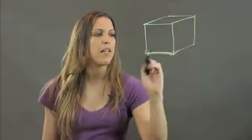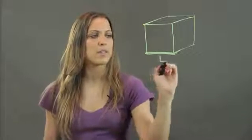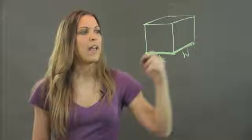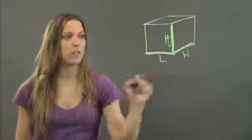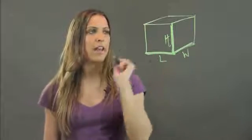When I'm talking about the length of a cube, I'm talking about this dimension right here. When I'm talking about the width, I'm talking about how far back it goes. That is my width. And when I'm talking about the height, I'm talking about how high my cube is. So these are my three dimensions: length, width, and height.